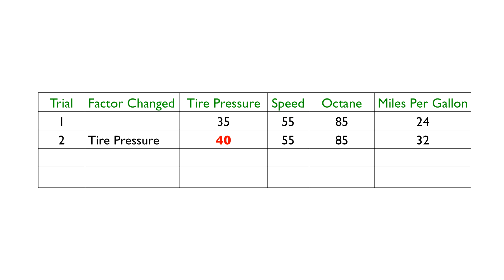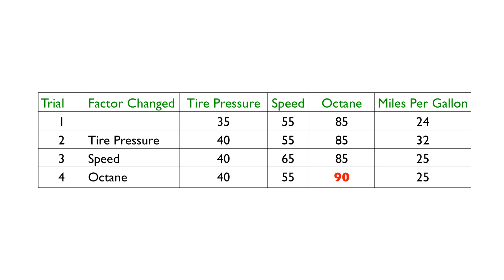With that noted, we stick with 40 psi and move on to test how speed impacts miles per gallon. We run the motorcycle at 65 miles per hour, leaving the octane at 85 since we don't want to change too many factors at once. Miles per gallon drops to 25, meaning faster speeds negatively impact performance. For the last trial, we leave tire pressure at 40 psi and change speed back to 55 miles per hour, then fill with 90 octane gasoline. When the trial is over, performance is the same as the previous trial, meaning octane use doesn't really seem to matter.